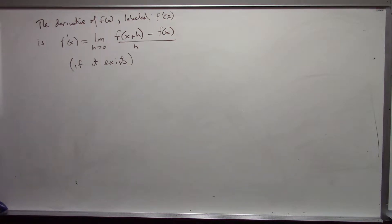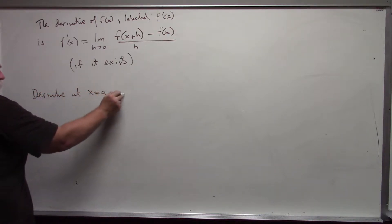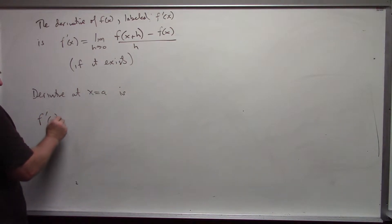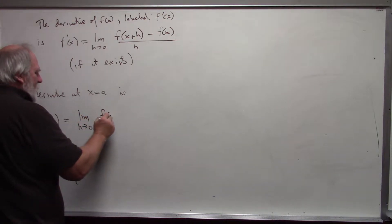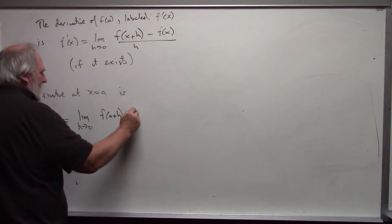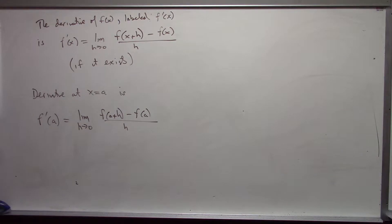The derivative at x equal a is f prime at a, which would be the limit as h approaches 0 of f of a plus h minus f of a divided by h. We just replace x, a generic x, with a specific value x equal a. Again, if it exists.